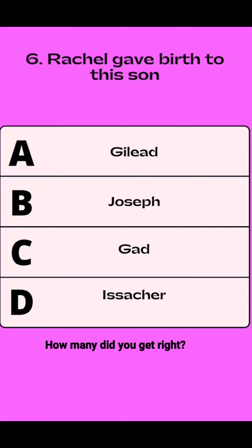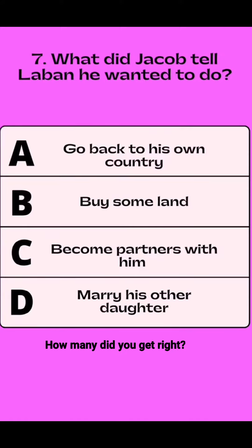The answer is B. What did Jacob tell Laban he wanted to do? Is it A, B, C, or D? The answer is A.